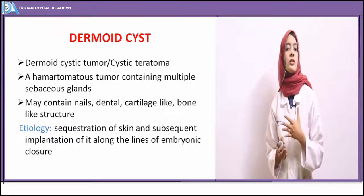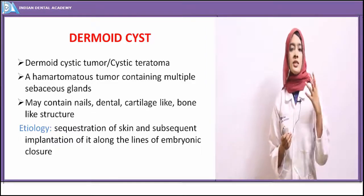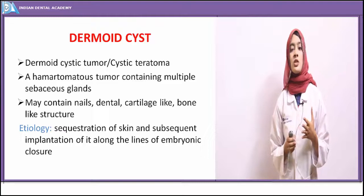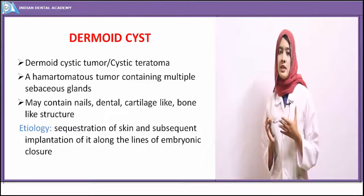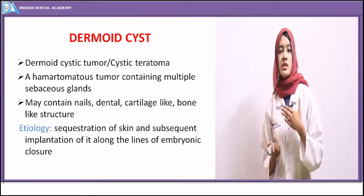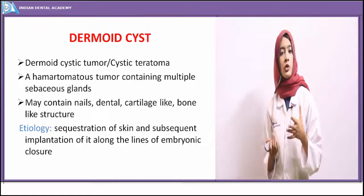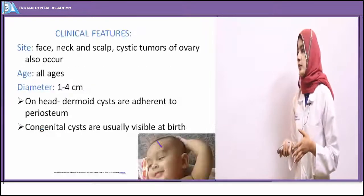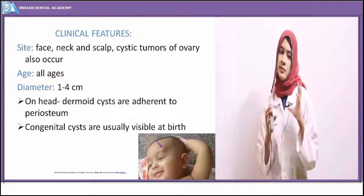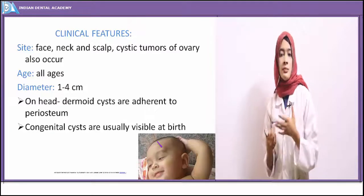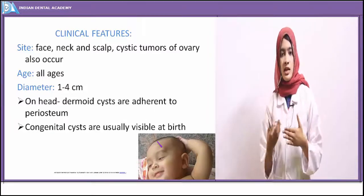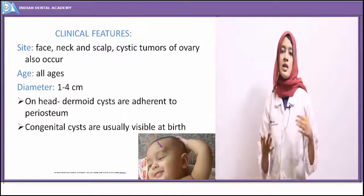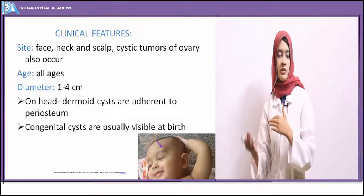Dermoid cyst may be seen anywhere along the face, scalp, or other regions of the body. Intra-abdominal cysts are also seen. There is no gender predilection, but few cysts associated with ovaries — cystic teratoma of the ovary — are seen in females exclusively. The site of occurrence may be the face, neck, or scalp. Sometimes when dermoid cysts are congenital, they may be visible at birth but noticed only after a few years of life.